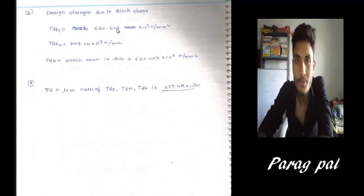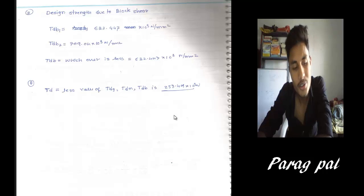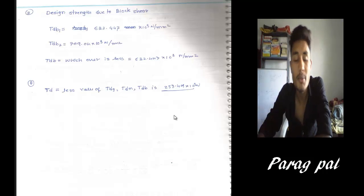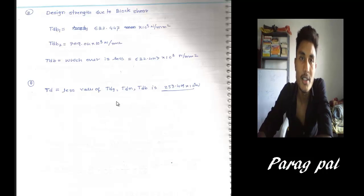So this is a way to solve the numerical. This numerical comes in an examination for 10 marks. Always determination of the design tensile strength because provided welded connection here. Design problems come for 20 marks and these come for 10 marks. Only determine this value, design strength. Thank you for watching my tutorial.